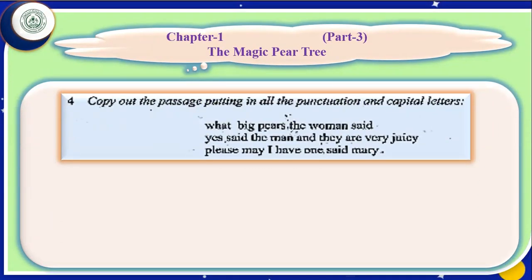Dear students, this is exercise 4 given in the book. What is written in the instructions? It is written: copy out the passage, putting in all the punctuation and capital letters. We shall write this passage once again by putting the punctuation marks. Let us look at the first sentence: 'What big pairs the woman said?' You can see no punctuation is used here. To do such type of question, we should keep a few things in mind.